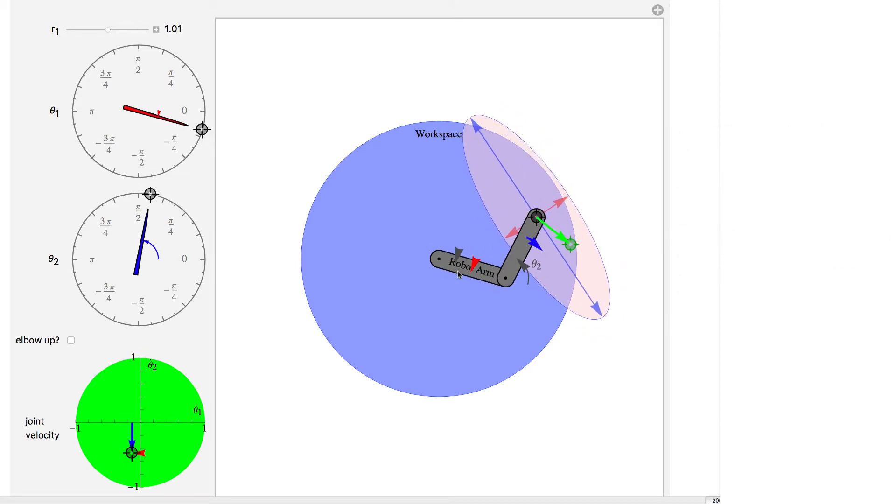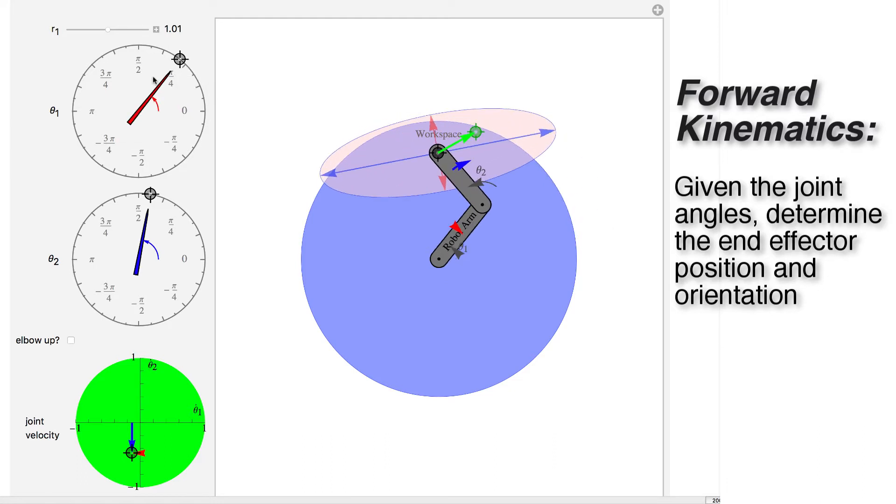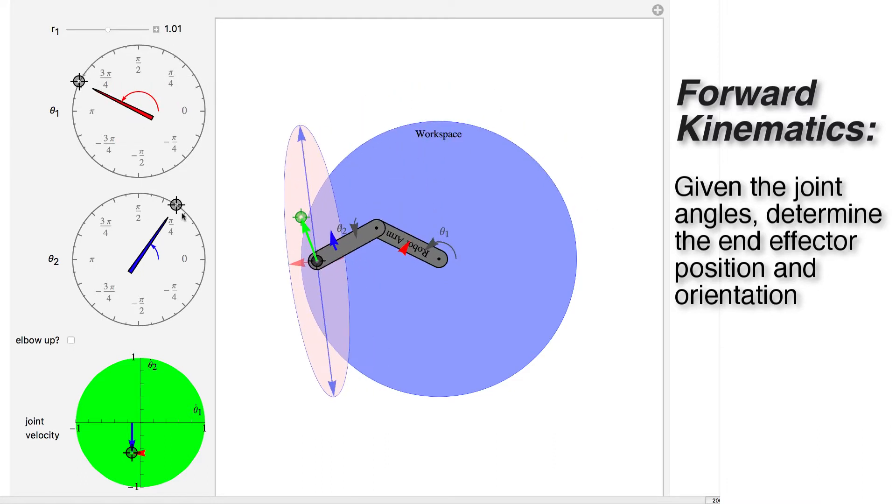So what we have here is a two-link robot arm, one link and the second link, and the first thing we can talk about is forward kinematics. If I tell you what the angles are of the robot joints, then that tells you where the whole robot is. We know where every point in this robot is just by knowing what the two links parameters are.